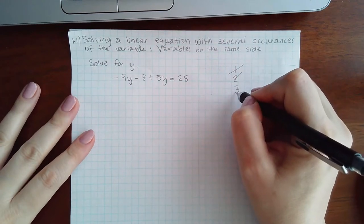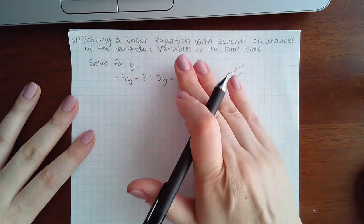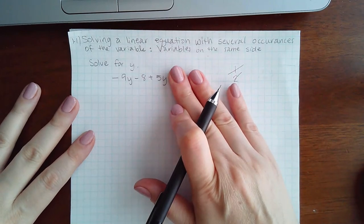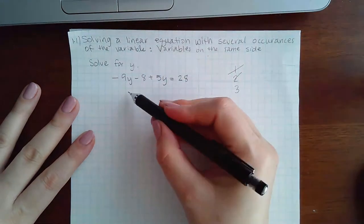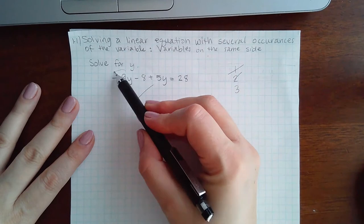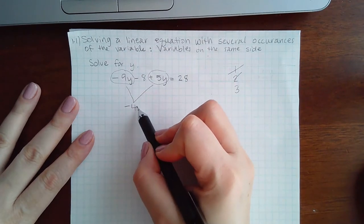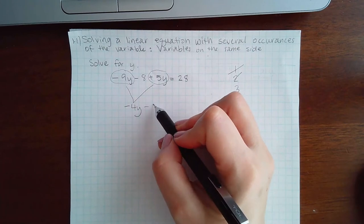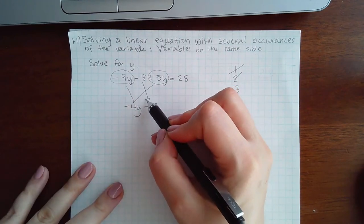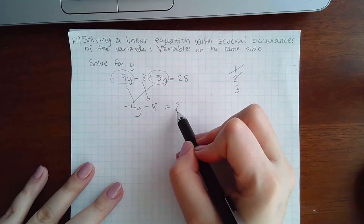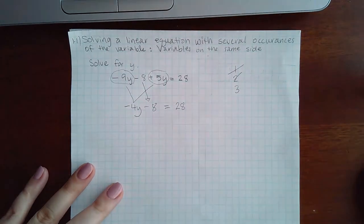Third step is to combine like terms on each side separately. On the left-hand side, I do have like terms. I have negative 9y and plus 5y. That gives me negative 4y. The negative 8, I'm just bringing down. There's only one term on the right-hand side, so nothing to combine.